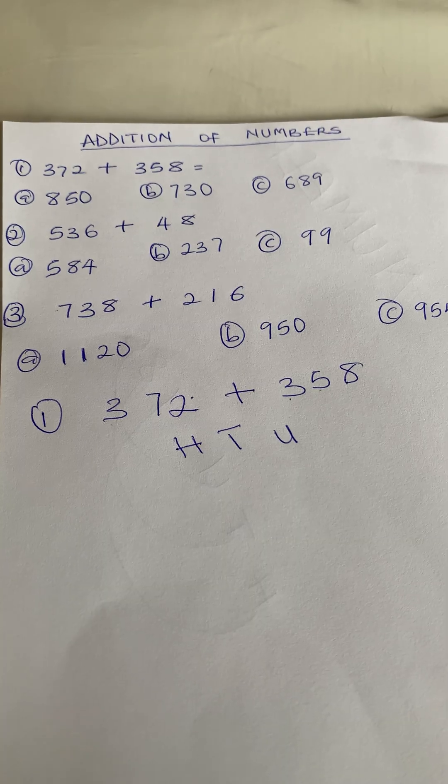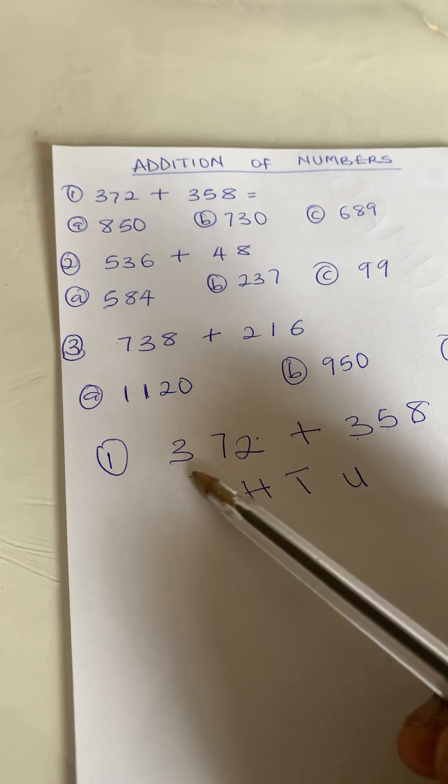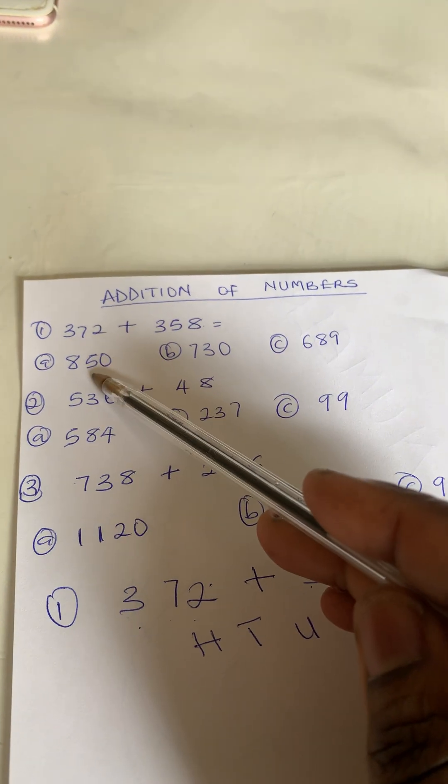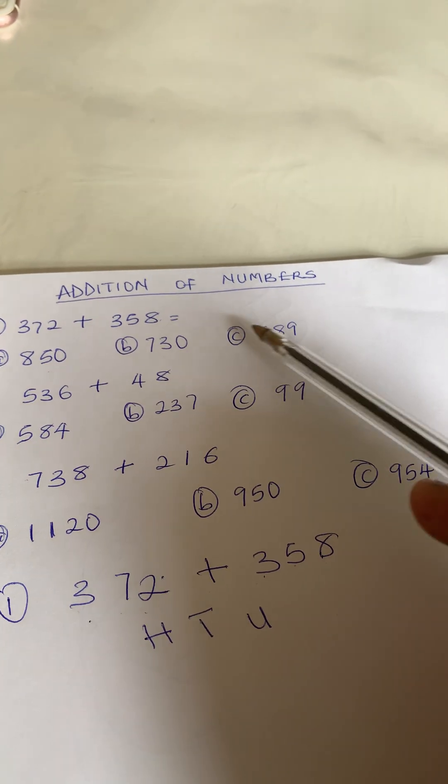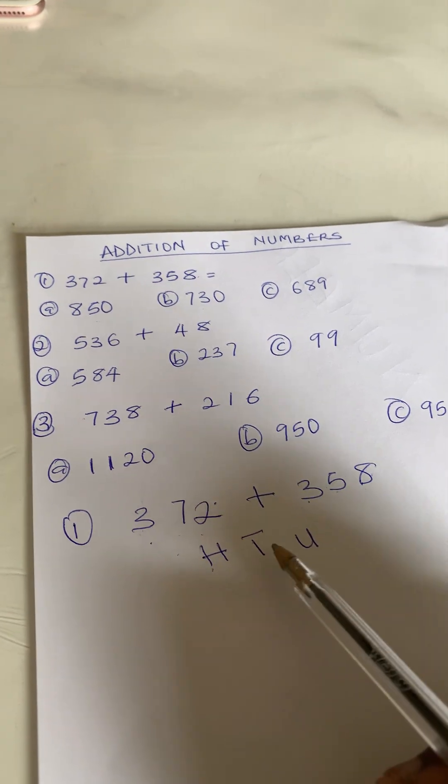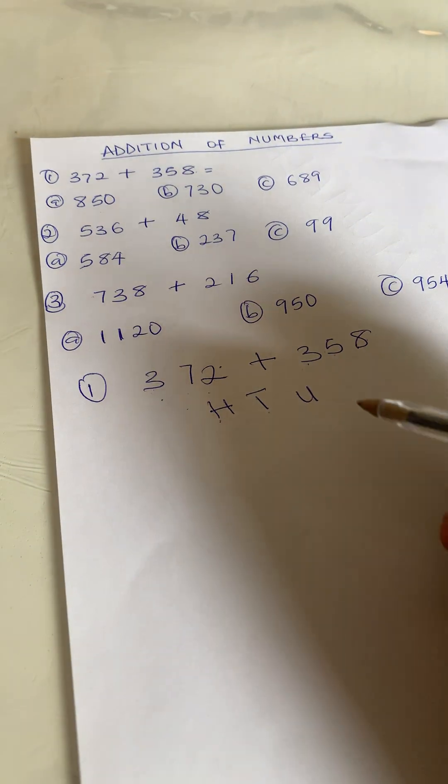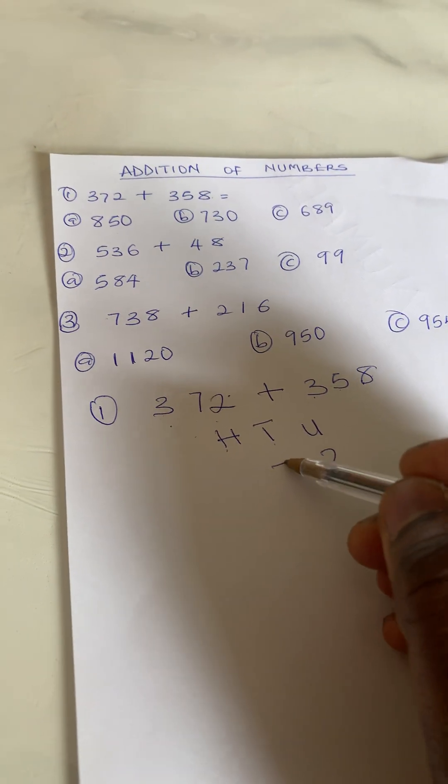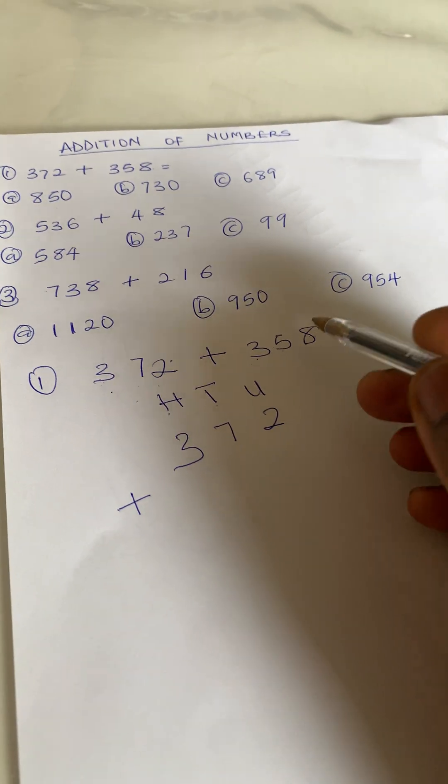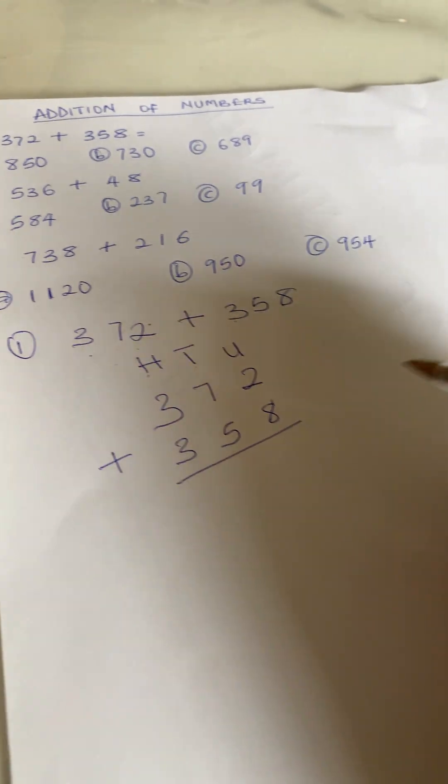For the first one, we have 372 plus 358, and the options are: a) 850, b) 730, c) 689. They are all three-digit numbers, so we have our hundreds, tens, and units. Starting from the right-hand side, we write 2, 7, 3, put your plus sign, then 8, 5, 3. You add it up.